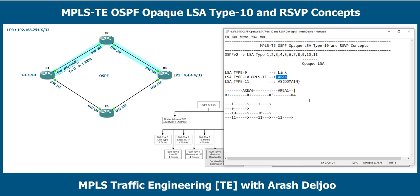The specific names of the opaque LSAs are: LSA type 9 is called Opaque Link, LSA type 10 is called Opaque Area, and LSA type 11 is called Opaque AS.